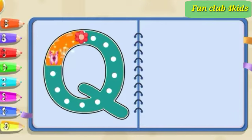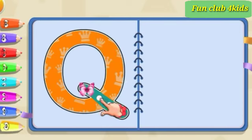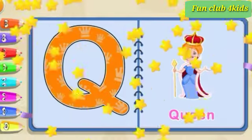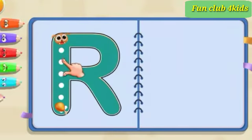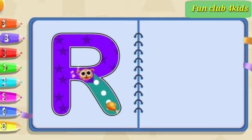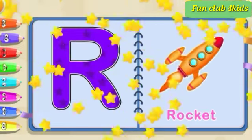Pull back, and around. And slide down. Q is for queen. Pull down, around and slide down. R is for rocket.